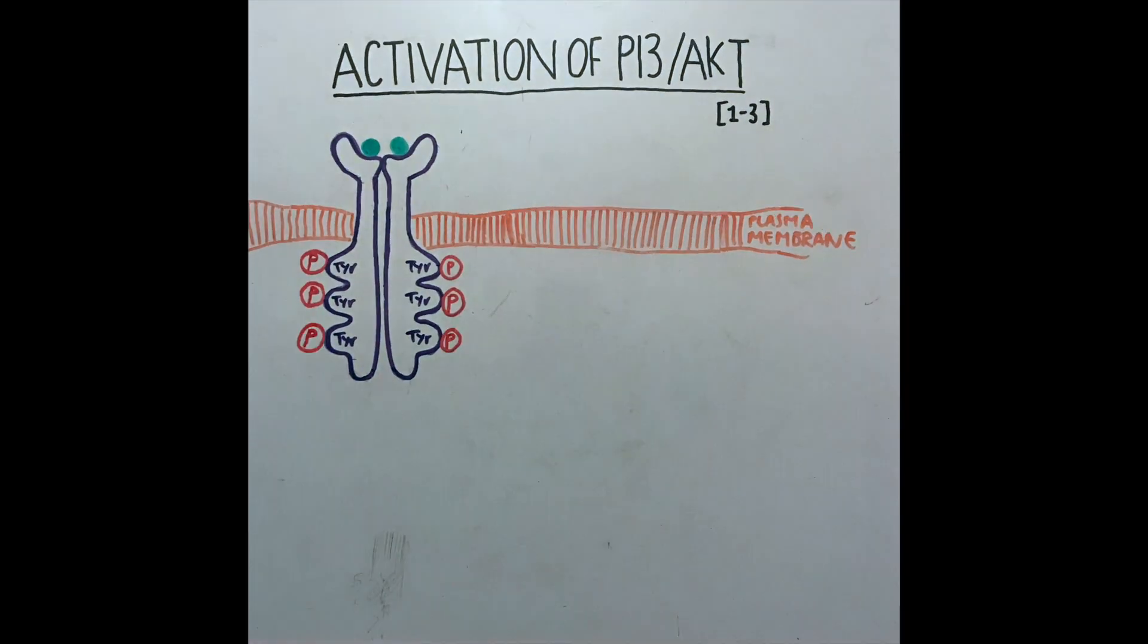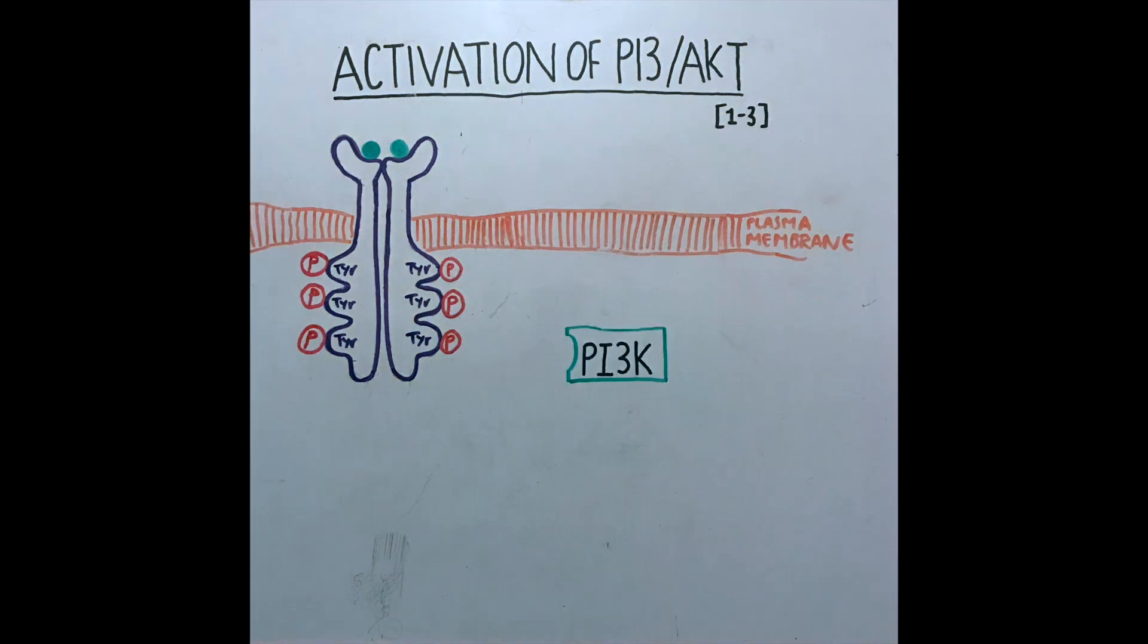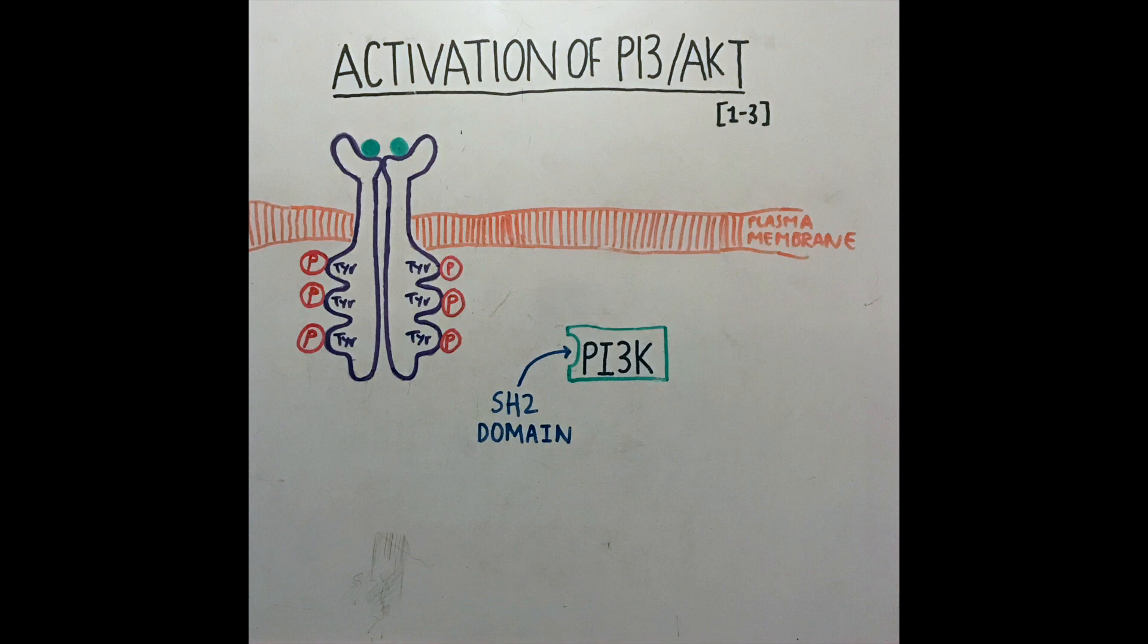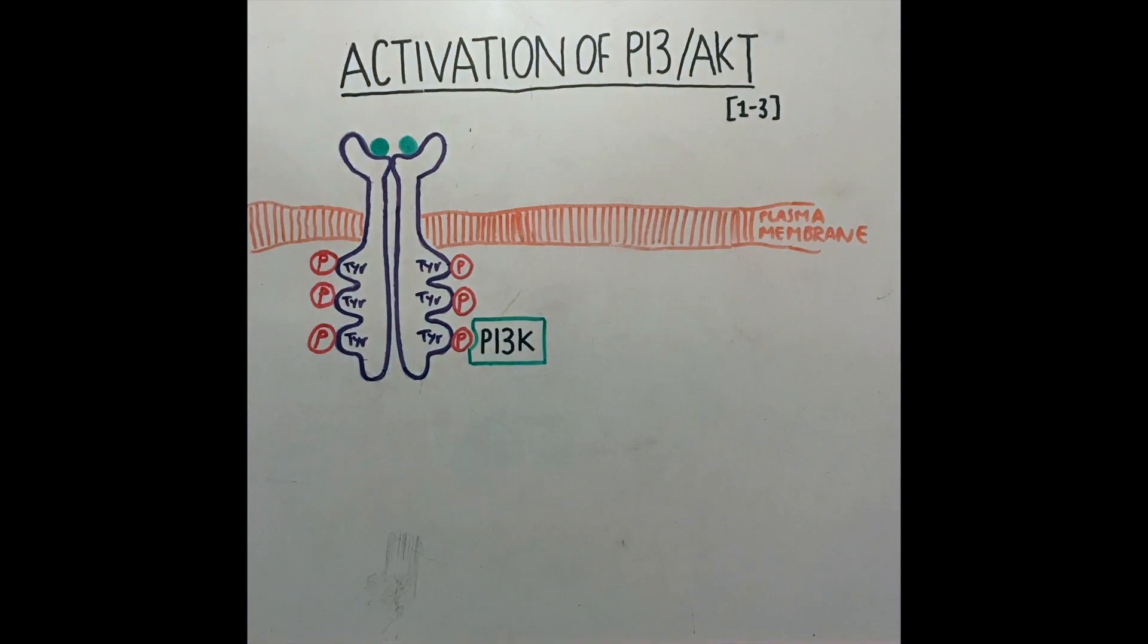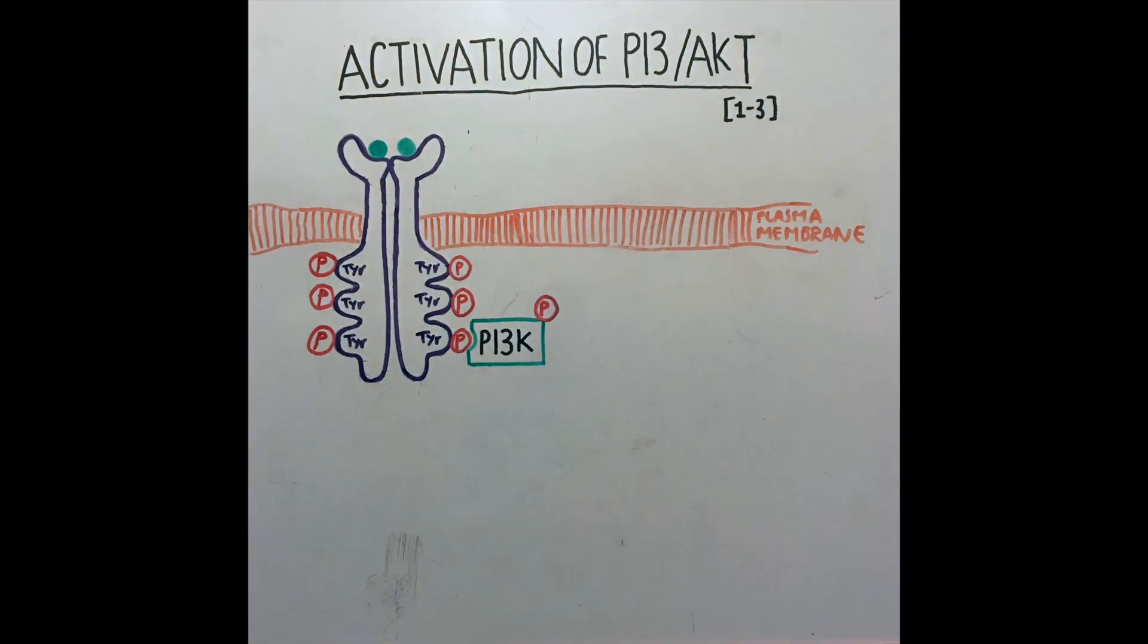In its phosphorylated site, the RTK recruits PI3 kinase due to PI3 kinase having an SH2 domain. The PI3 kinase binds to the RTK which phosphorylates and activates PI3 kinase.